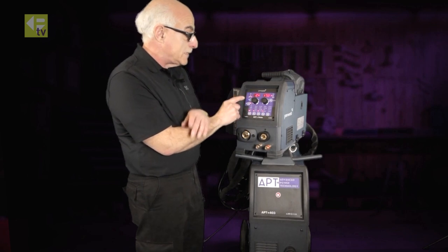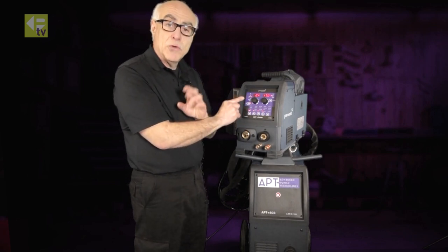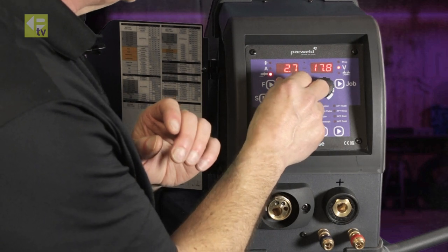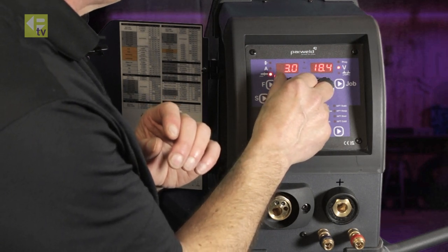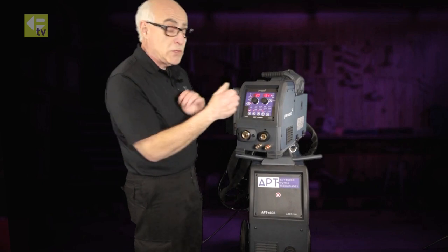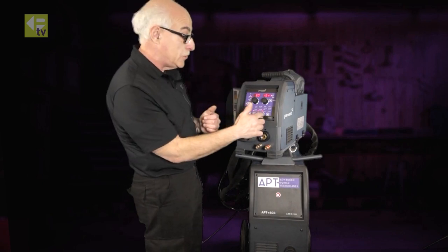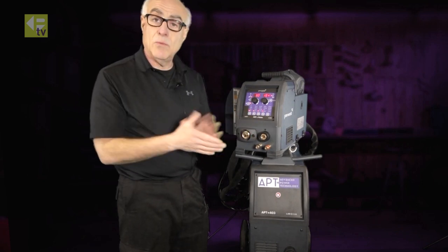Or if you have a material thickness that you're not sure of where you need to be, that will automatically come in and sort that out for you just by putting your plate thickness in, should say three millimeter. And then when you weld, it'll come up with a value. The voltage is automatically set because we're on synergic control and away you go.